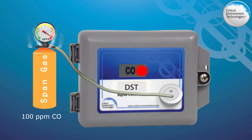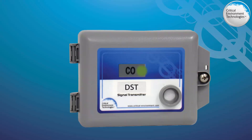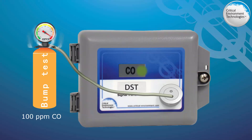Remove the span gas cylinder. To ensure calibration was successful, do a bump test on the DST and compare the gas concentration you are flowing to the reading on the PDC. If it is within 5%, it is acceptable.